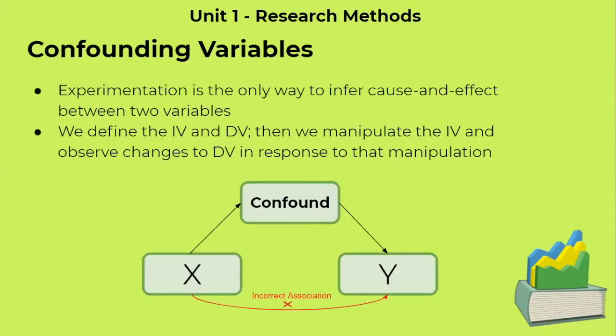The first thing we are going to be talking about are confounding variables. In experimentation, we can infer cause and effect. This is the only way to infer this type of association because there is good controlling of confounding variables. But if we don't control our confounding variables, we're going to have an incorrect association, as depicted by this diagram.